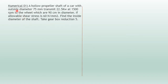Here is the problem: a hollow propeller shaft of a car with outside diameter 75 mm transmits 22.5 kW at 1500 RPM to the wheels which are 90 cm in diameter. So what is given to us — the propeller shaft is hollow in nature, the outside diameter is 75 mm, the power is 22.5 kW, the RPM is 1500, and the diameter of the wheel is 90 cm.